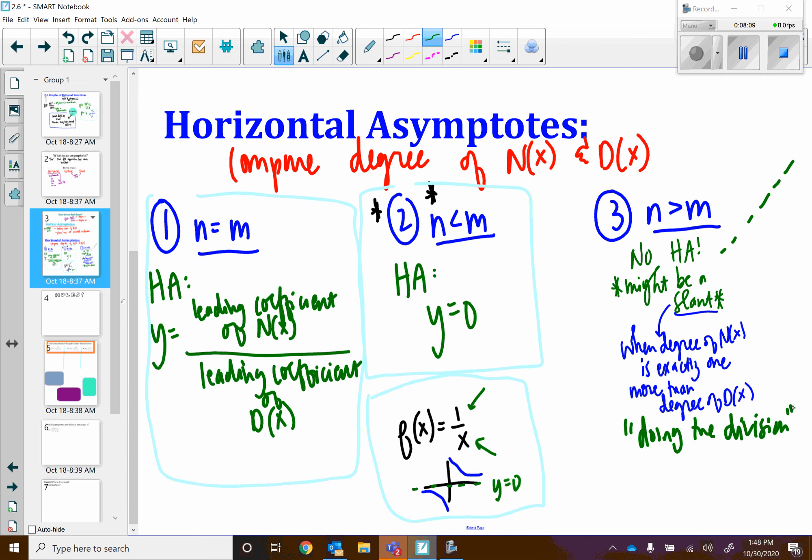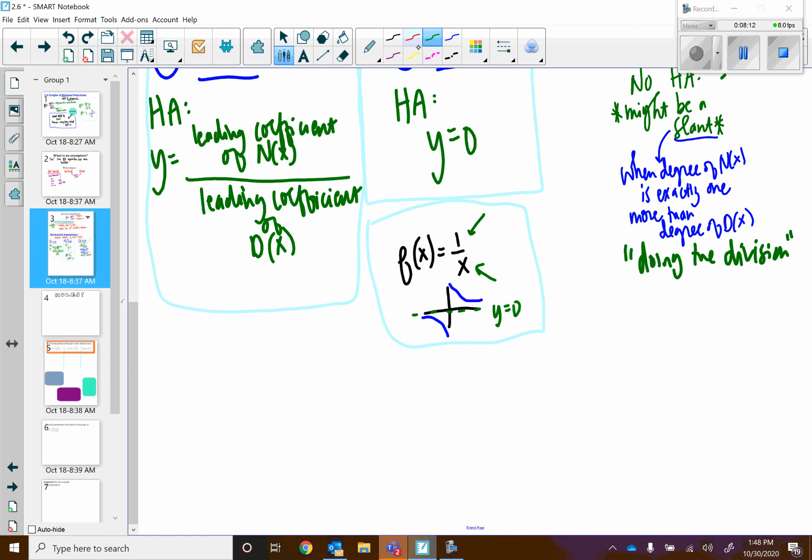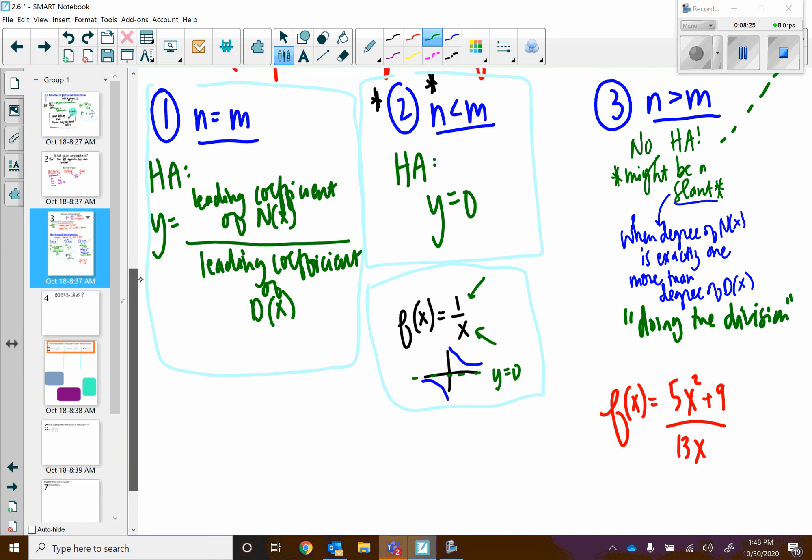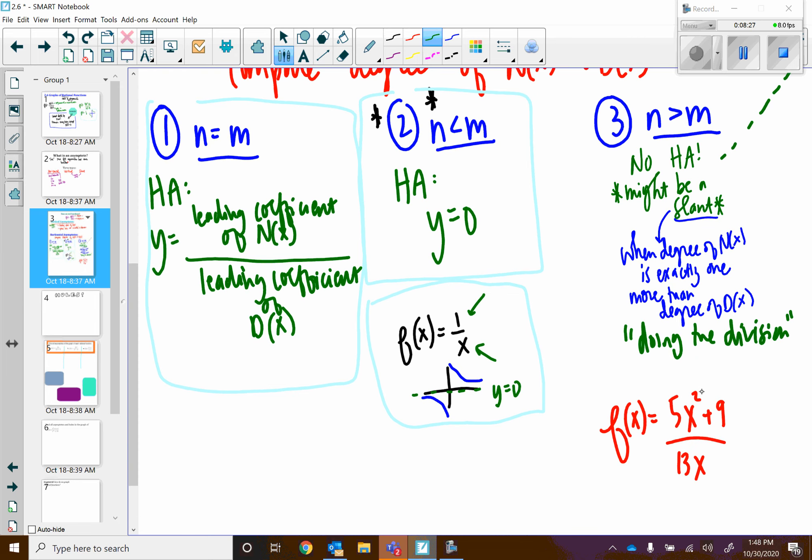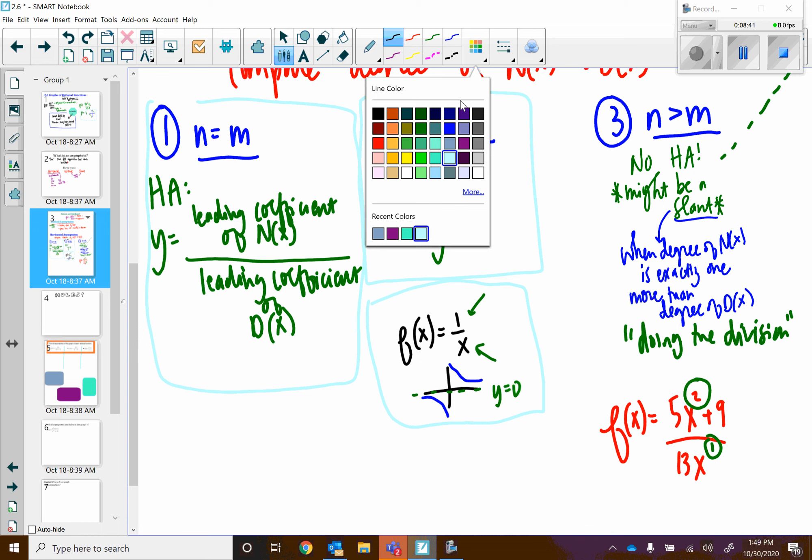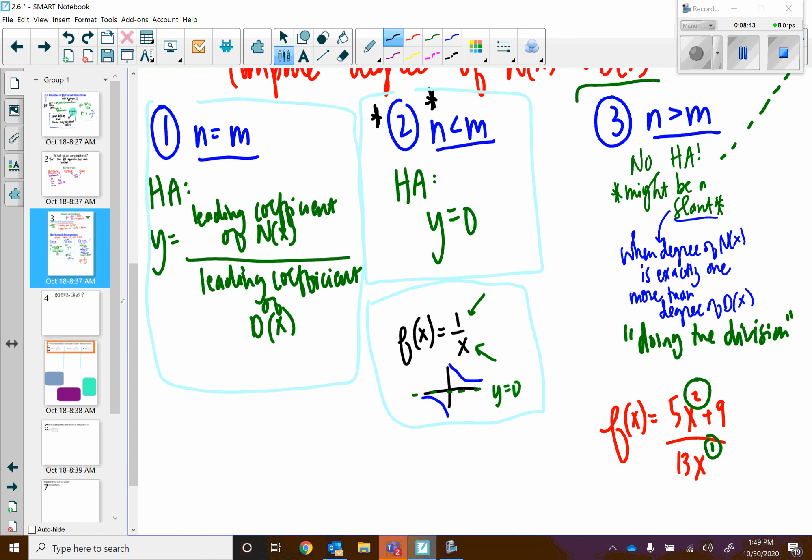And I'm putting this in quotes because I'll show you, we'll do an example in class, but if I had like f of x is equal to 5x squared plus 9 over 13x, notice the numerator is exactly one more than the denominator. This has a degree of 2, this has a degree of 1, 2 is 1 greater than 1. So we would do this division. I would take 5x squared plus 9 divided by 13x. And again, we will do examples, more concrete ones in class, but right now we're just getting the content down.